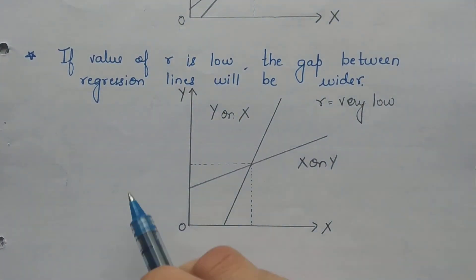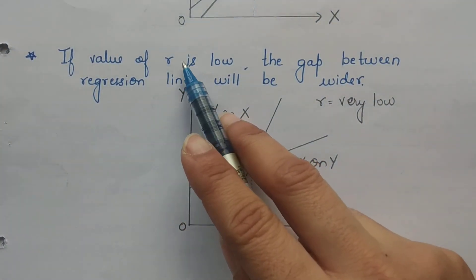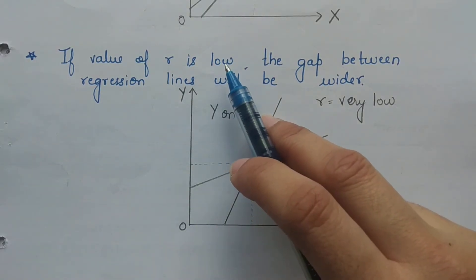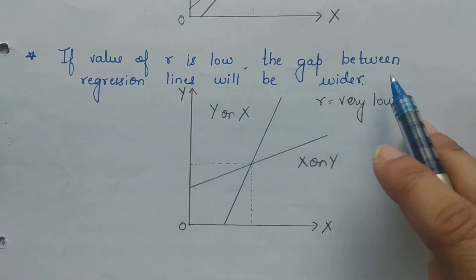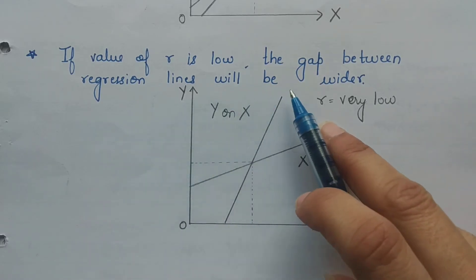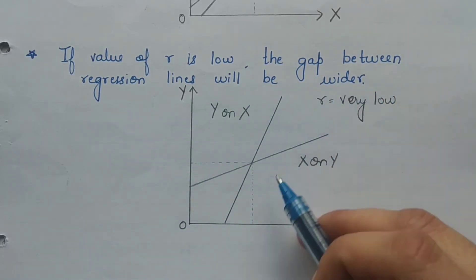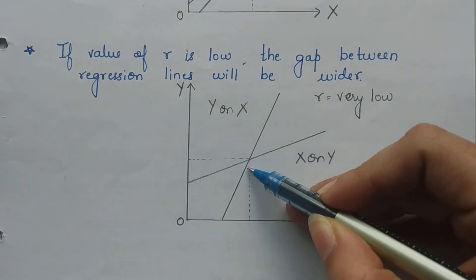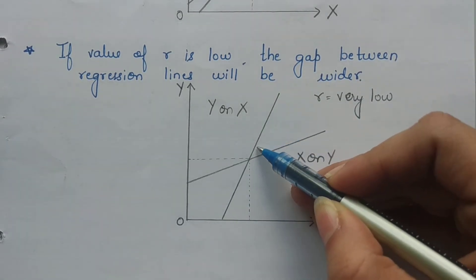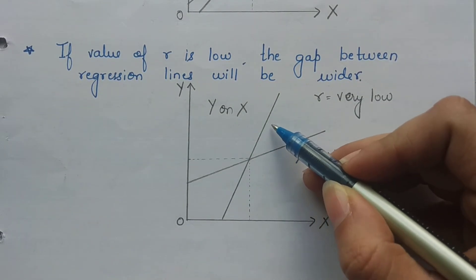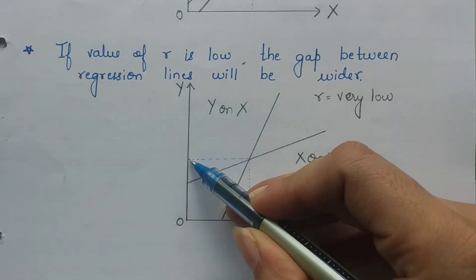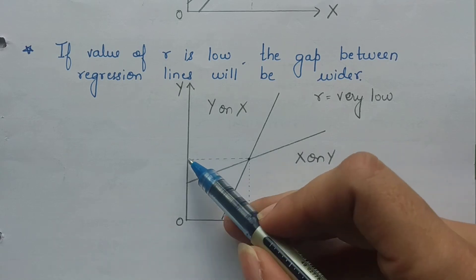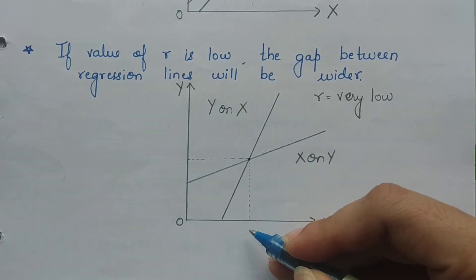If your correlation value is very low, like 0.2 or 0.1, then the gap between the two regression lines will be very wide. In that case, this is your y on x and this is your x on y, and the gap between the two regression lines is very broad. The point at which they intersect gives us the value of x-mean and y-mean.